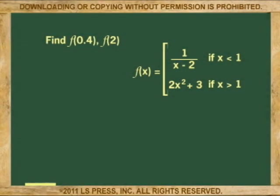Let's try another example. This time we'll define the function using two formulas. Find the function of f at 0.4 and the function of f at 2. If f of x equals 1 over x minus 2 and 2x squared plus 3, if x is less than 1 and if x is greater than 1.